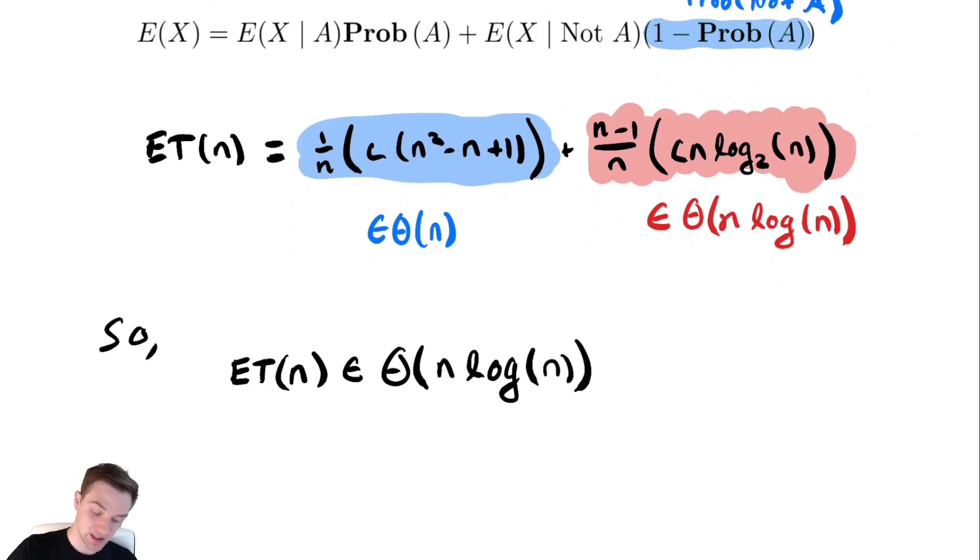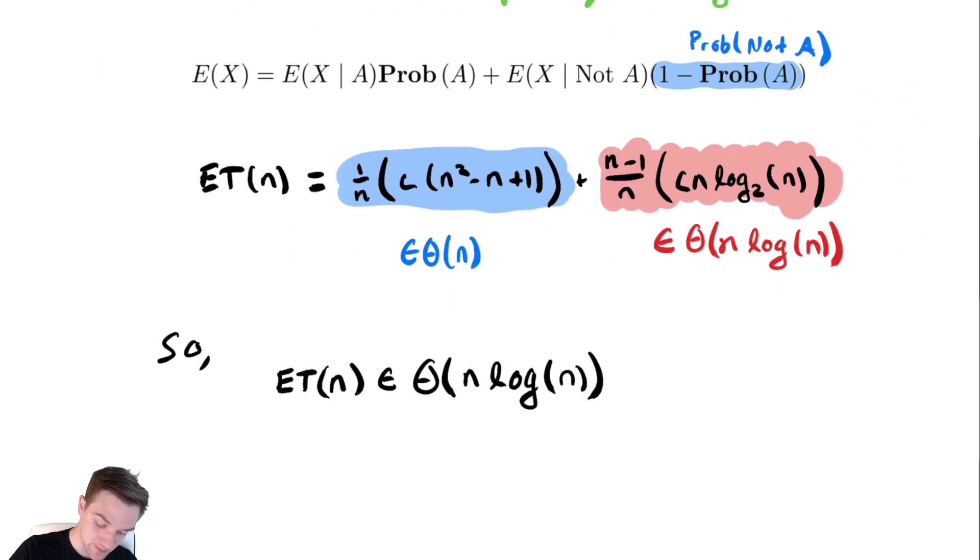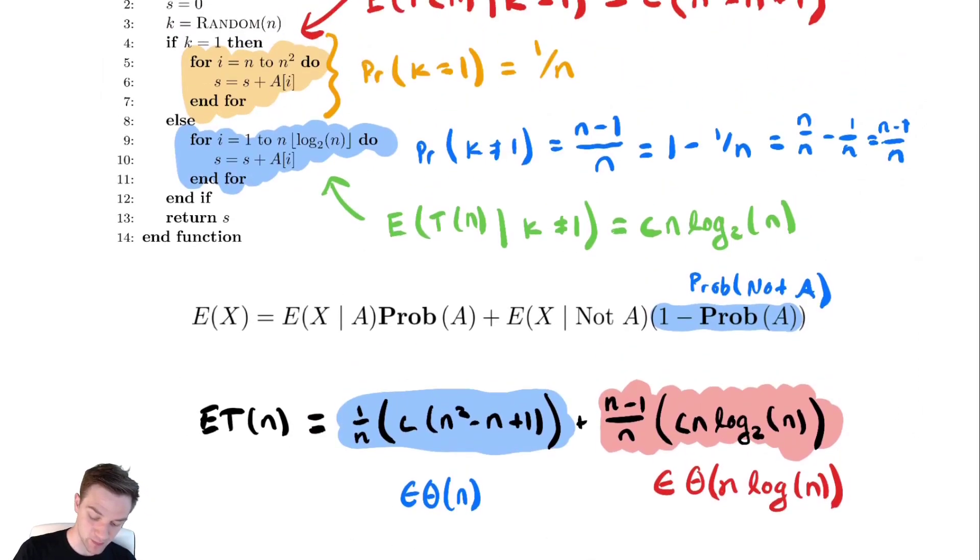To finish this, maybe we discuss the best case and worst case running times. The best case would be that it performs the second algorithm. Why is that? If we look at the run time of these different for loops, the first for loop actually takes longer to run. So this first for loop is in theta of n squared, and the second for loop is in theta of n log n. So for this algorithm, the worst case will be theta of n squared, that we actually execute that first for loop.